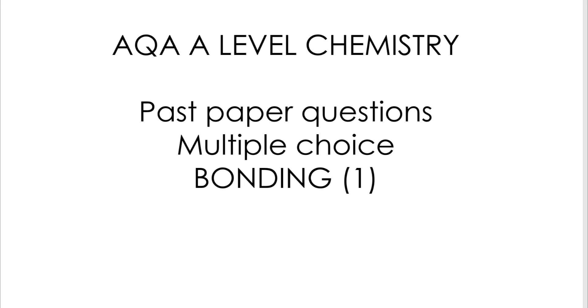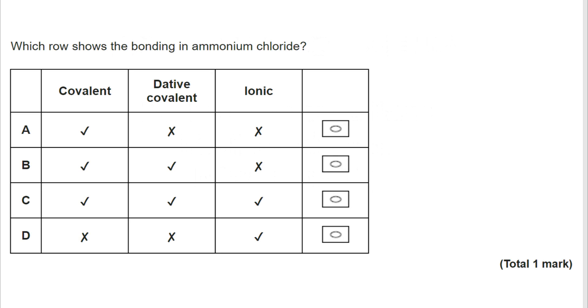So let's start with number one. In this particular question we're dealing with ammonium chloride. We want to know what type of bonding is present within it. Let's first of all consider ammonia. Now you will have drawn the dot cross diagram for ammonia way back in GCSE, so we know that ammonia has covalent bonding.